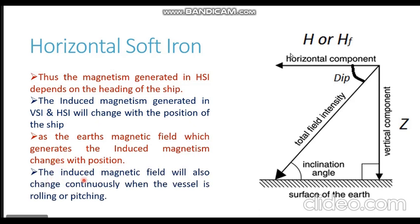The induced magnetism in the ship structure will also change continuously when the vessel is rolling or pitching. When the vessel is rolling or pitching, the fore and aft longitudinals, the athwartship beams, and the vertical structures are all changing their orientation time and again. With every roll and every pitch, the HSI and VSI change their orientation, and as their orientation changes the induced magnetism in those structures also changes.